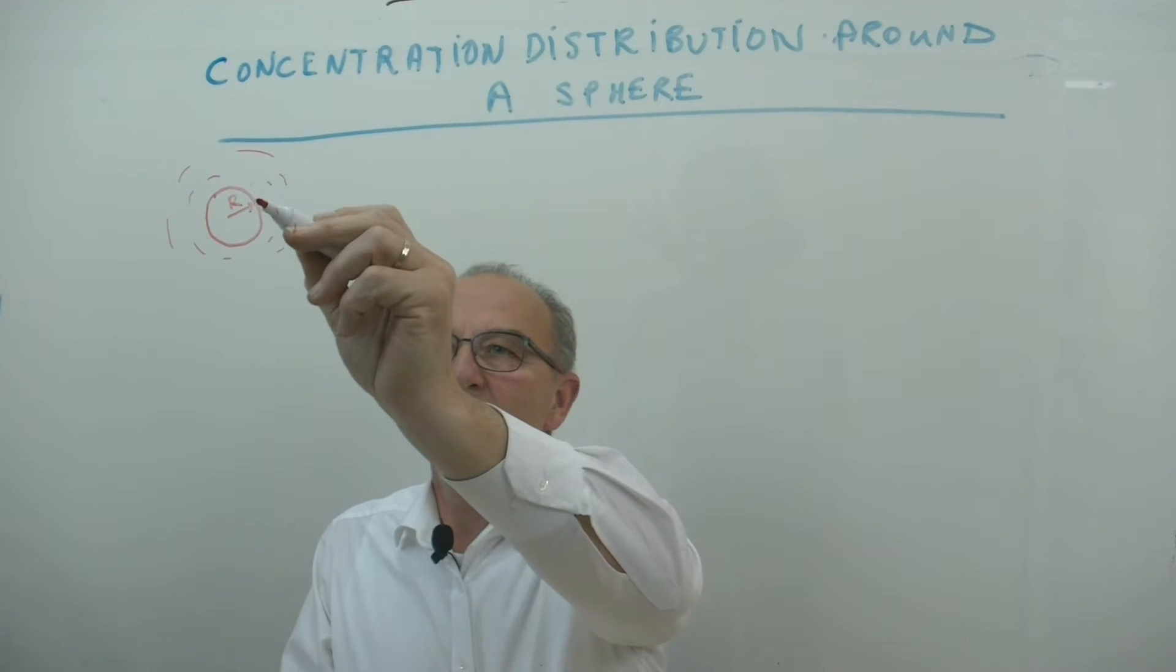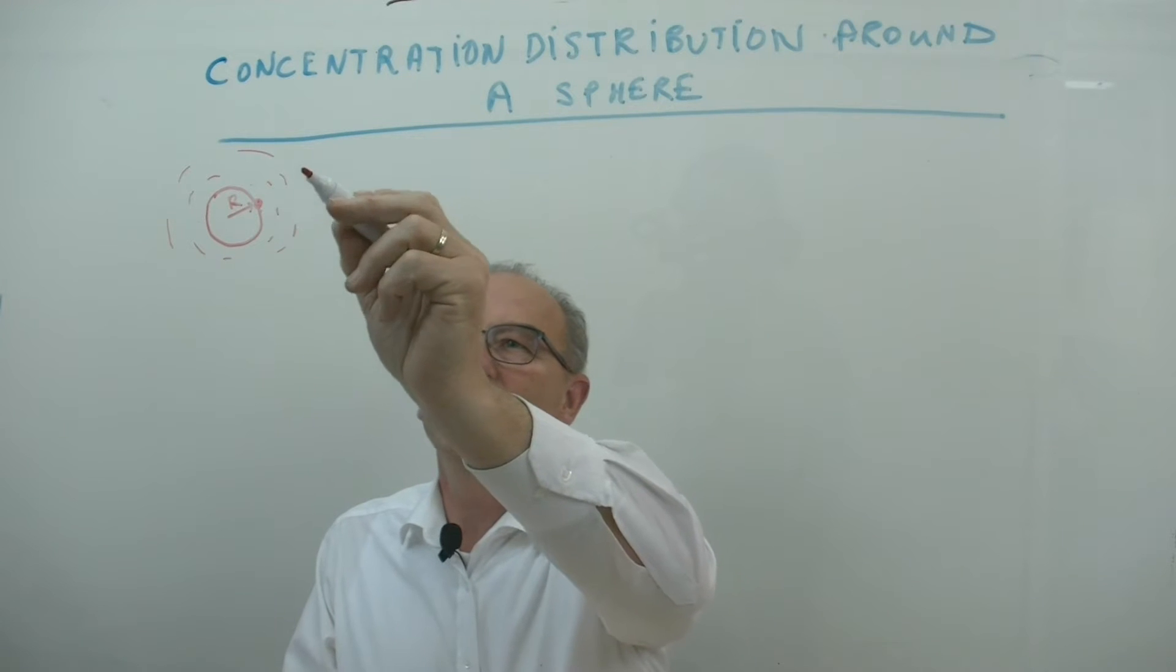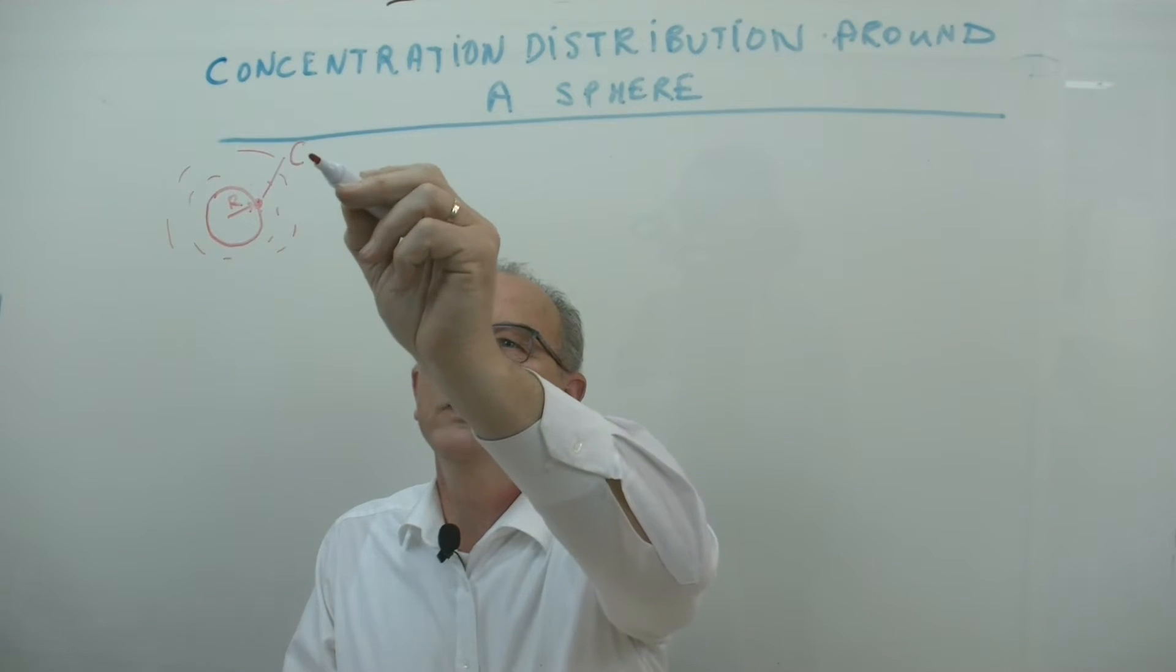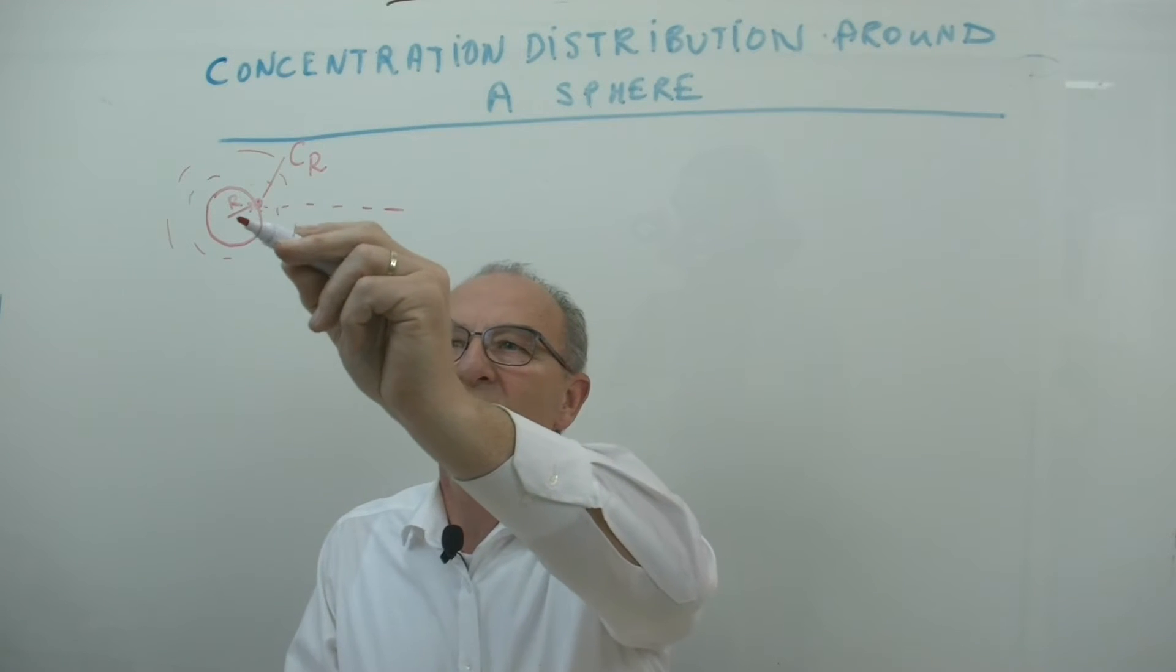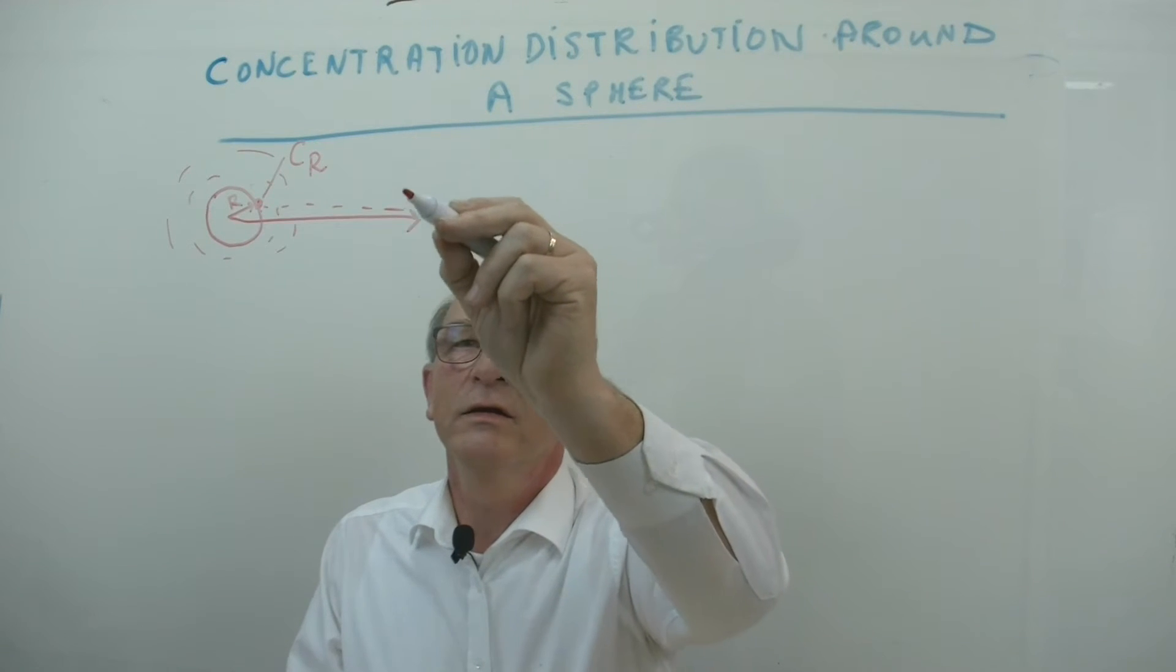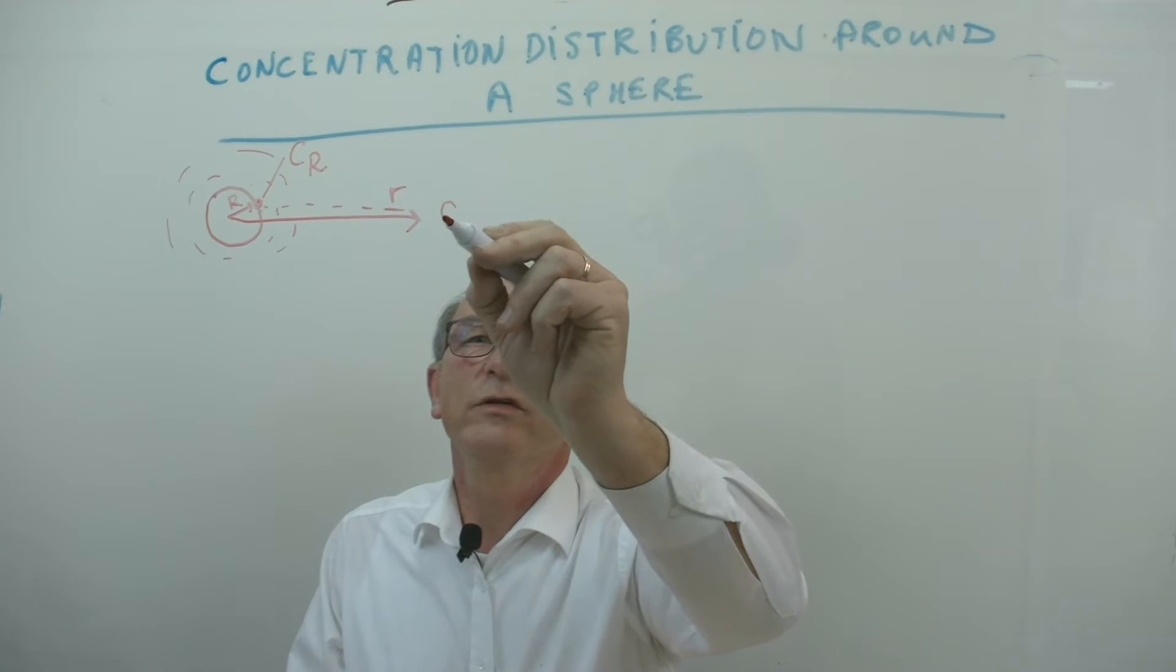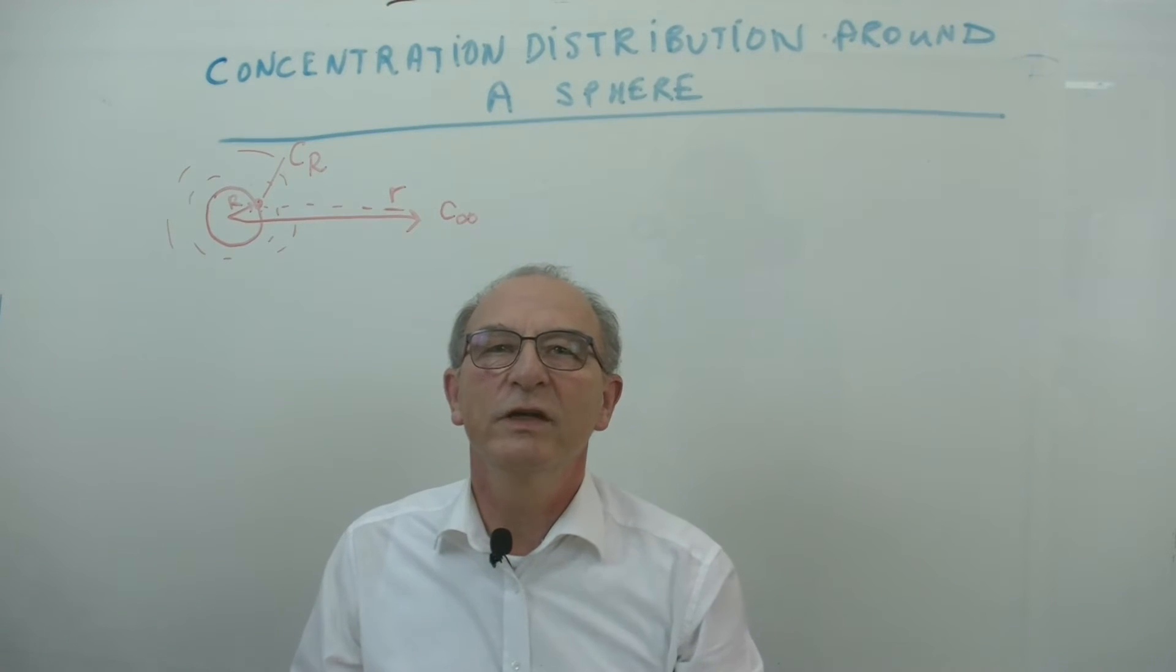So we assume that at the surface of the pill we have a concentration Cr and somewhere far away at the radius R we assume that the concentration in infinity will go to C infinity.